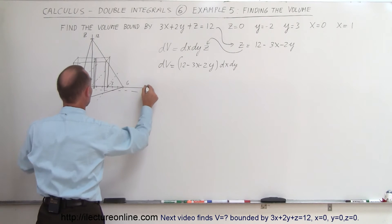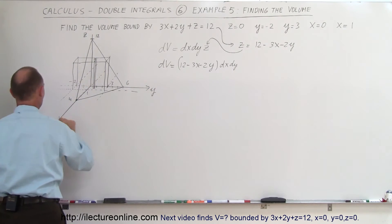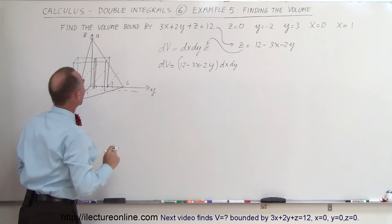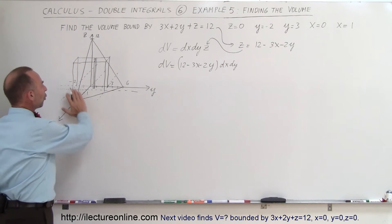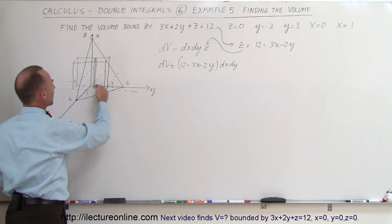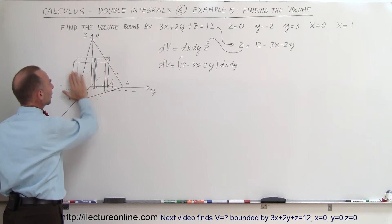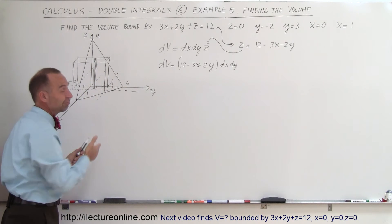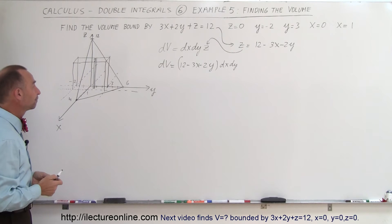This is the y-axis, this is the x-axis, and this is the z-axis. To find the total volume, we first integrate in the x direction and then in the y direction, or we can do y first then x — either order works just fine.